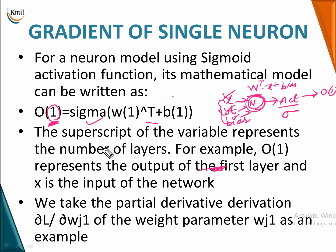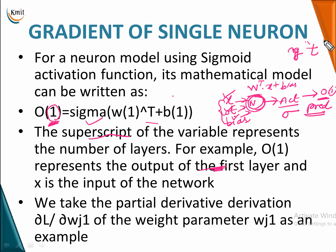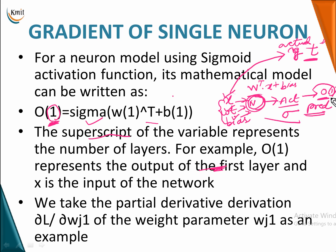The superscript of the variable represents the number of layers. This is our predicted output. You already have an actual output — in some textbooks called Y, here we are going to take it as T. For an input X, the actual output value is T, and what you have predicted after passing it through a single neuron model is O.